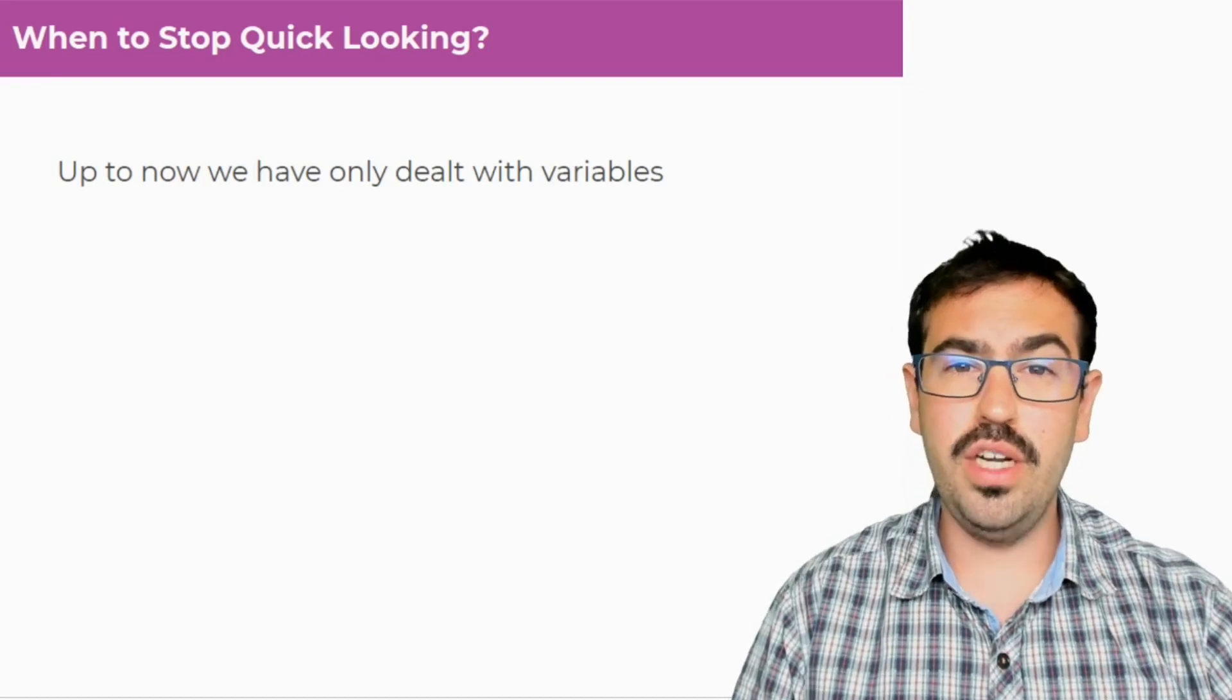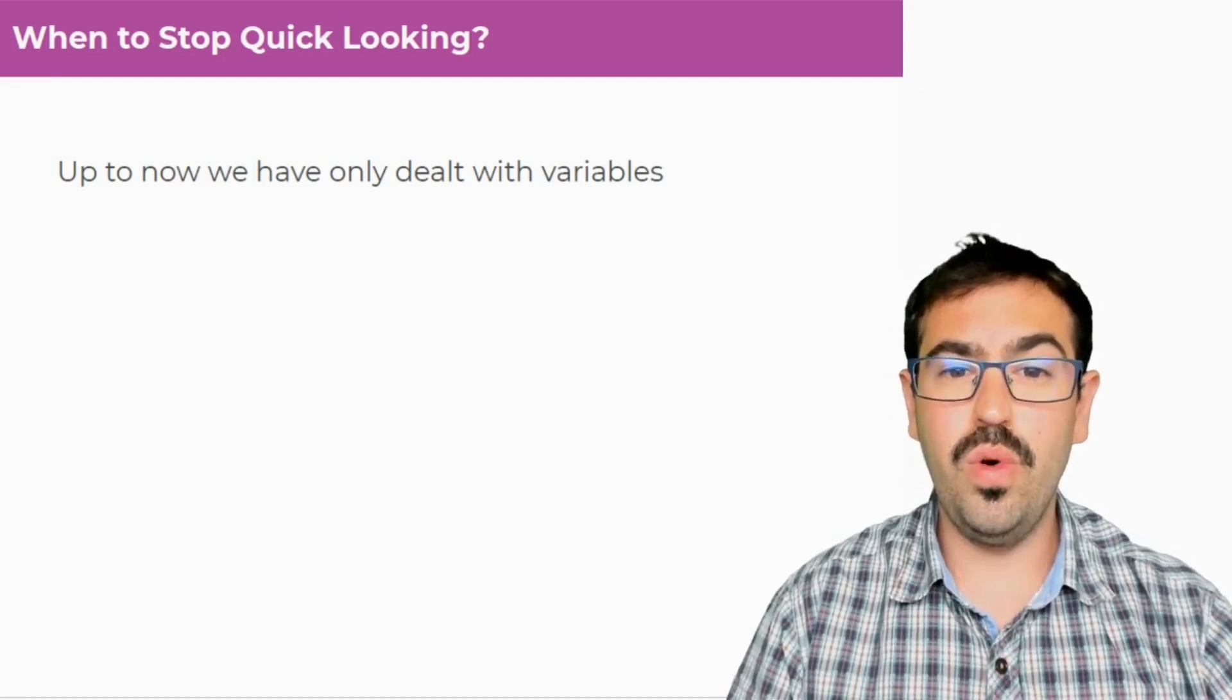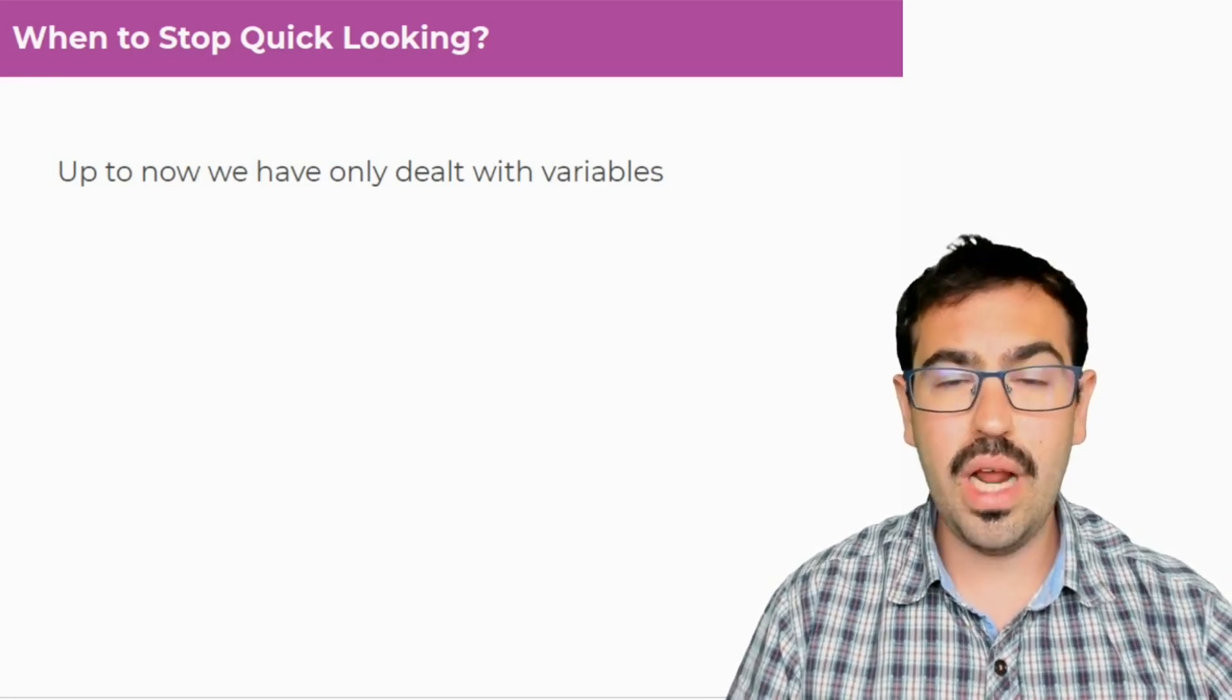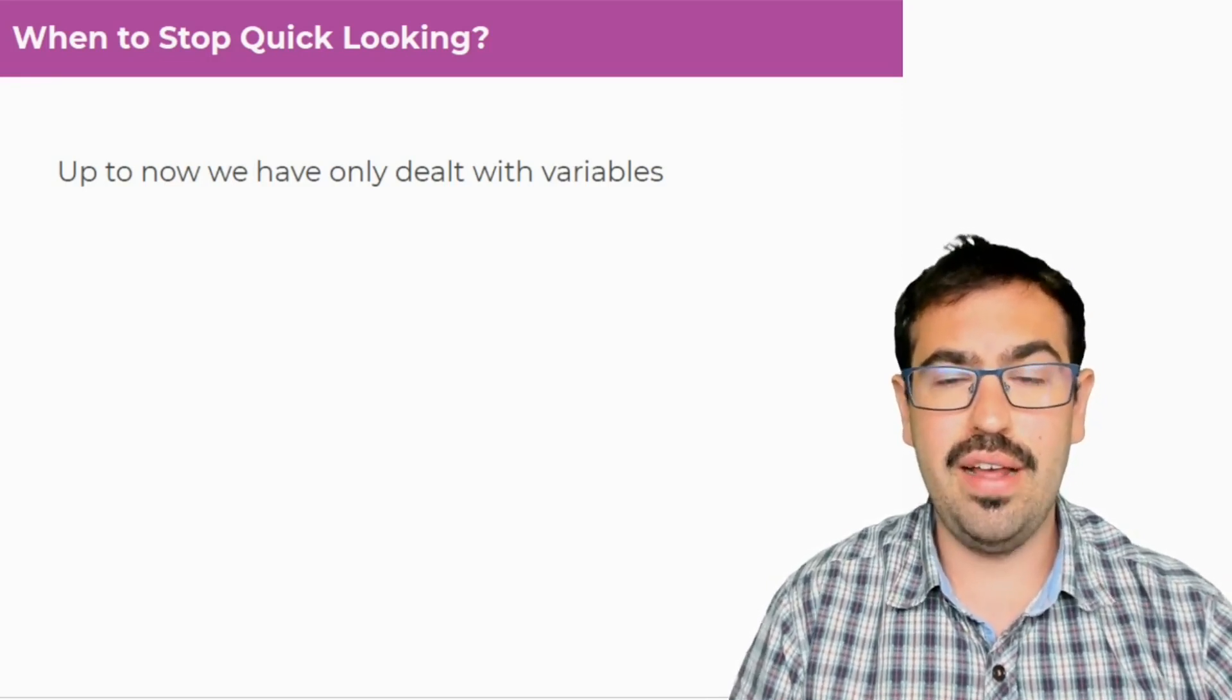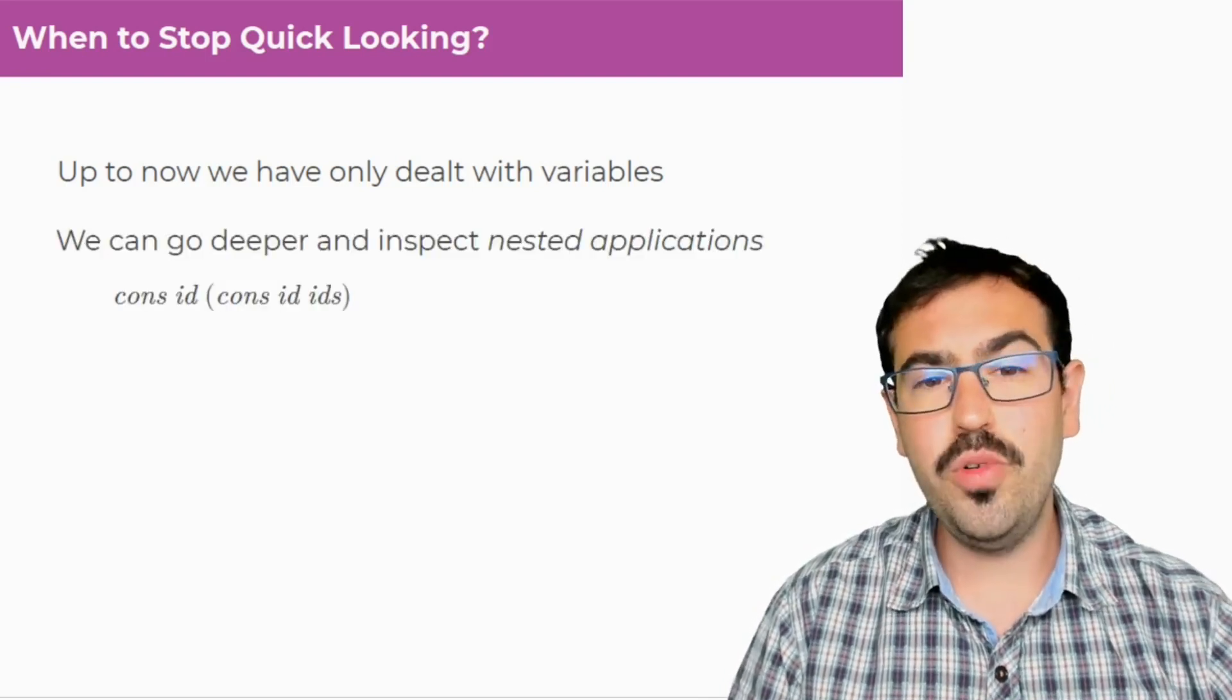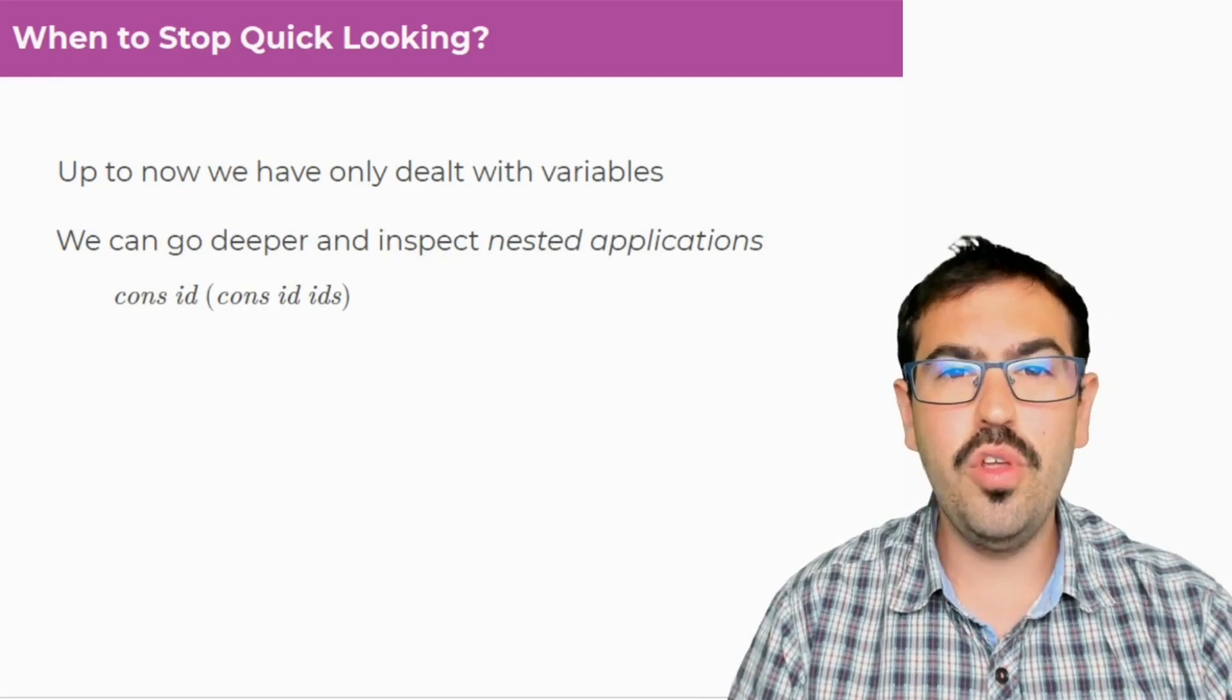But the question is when to stop quick looking. Up to now, we've only dealt with variables. So everything was one application. And this application had arguments, but those arguments were all variables. We can actually go deeper and inspect nested applications.